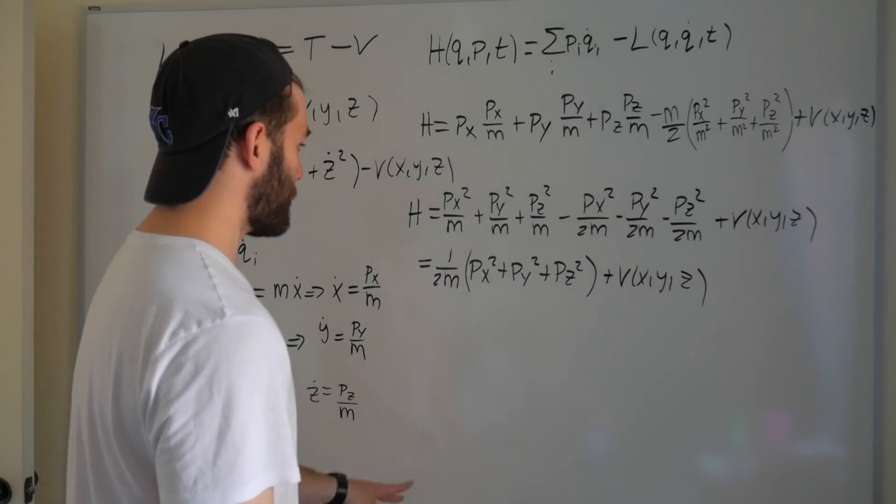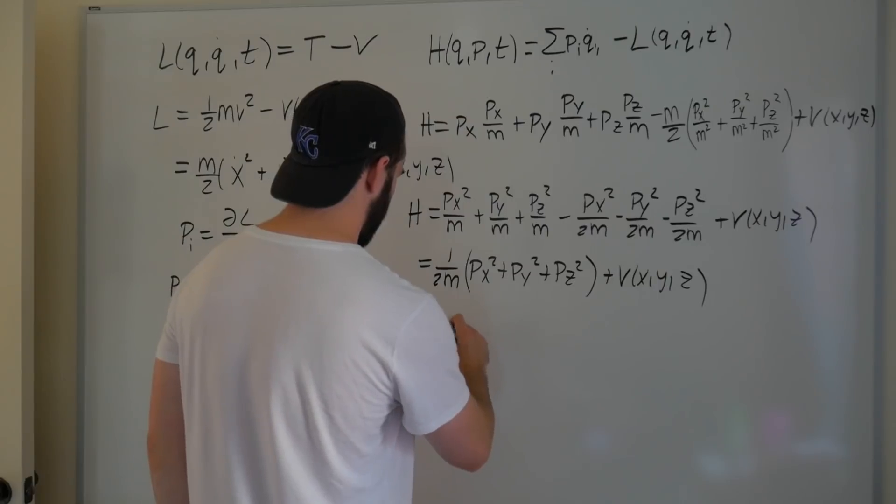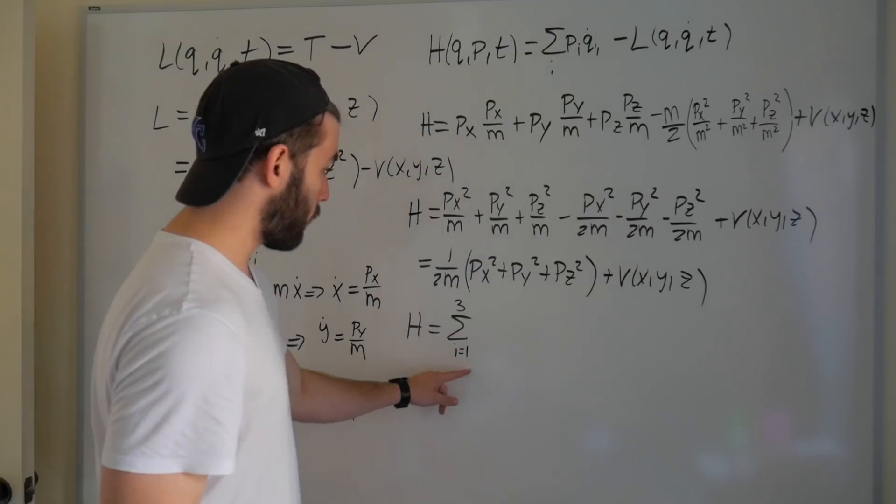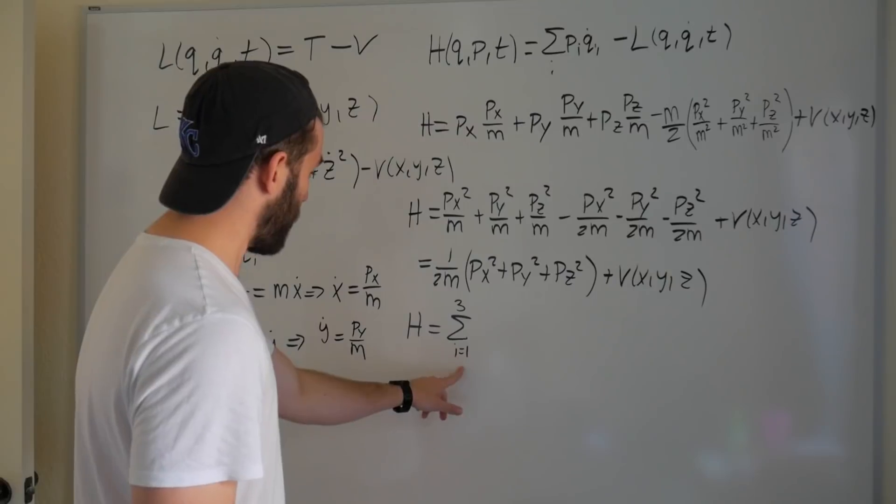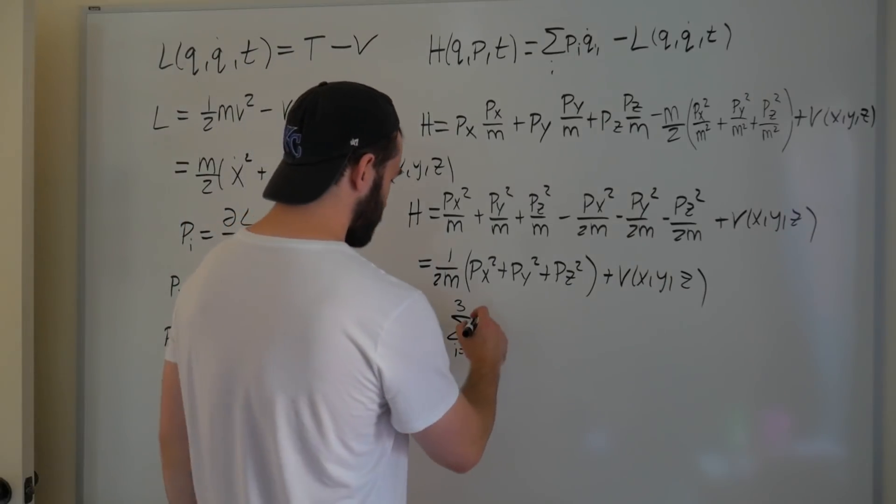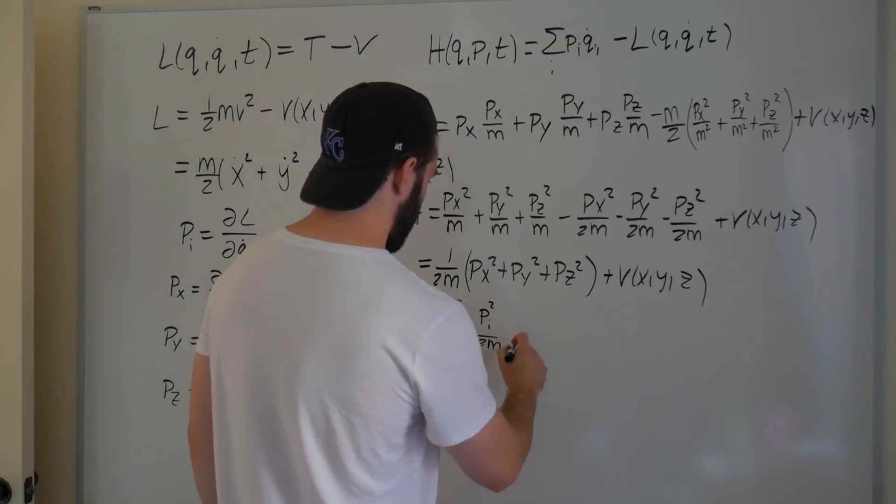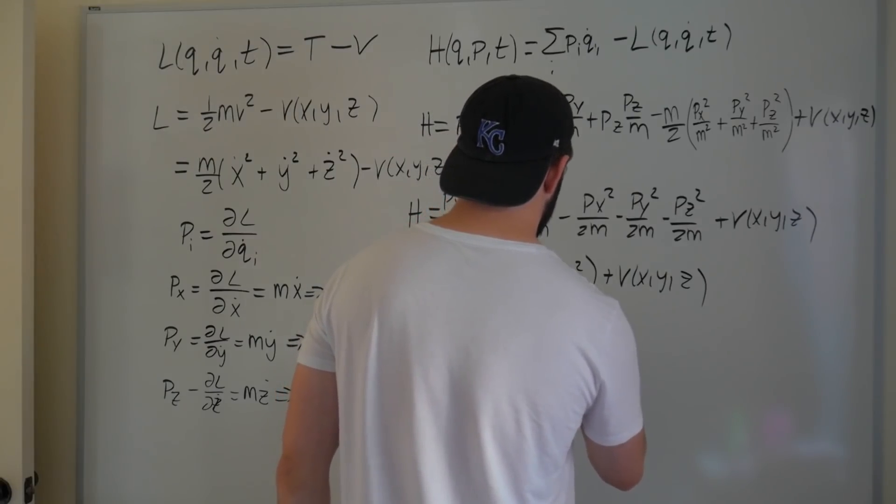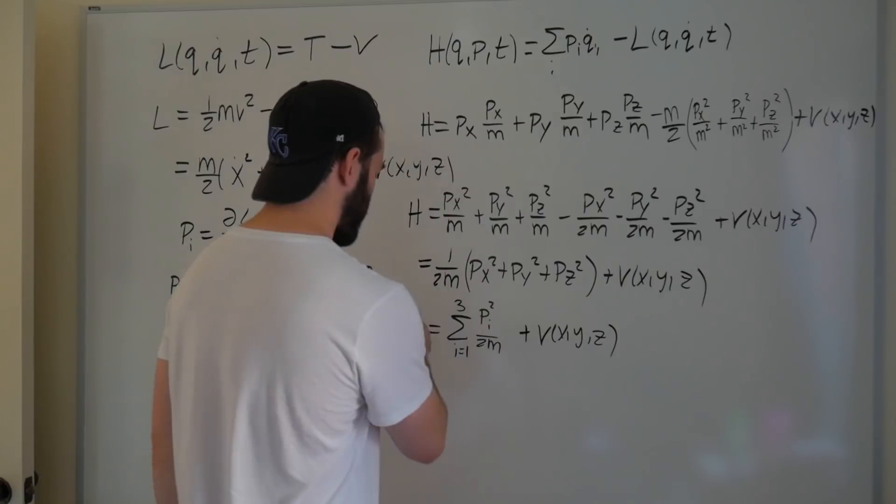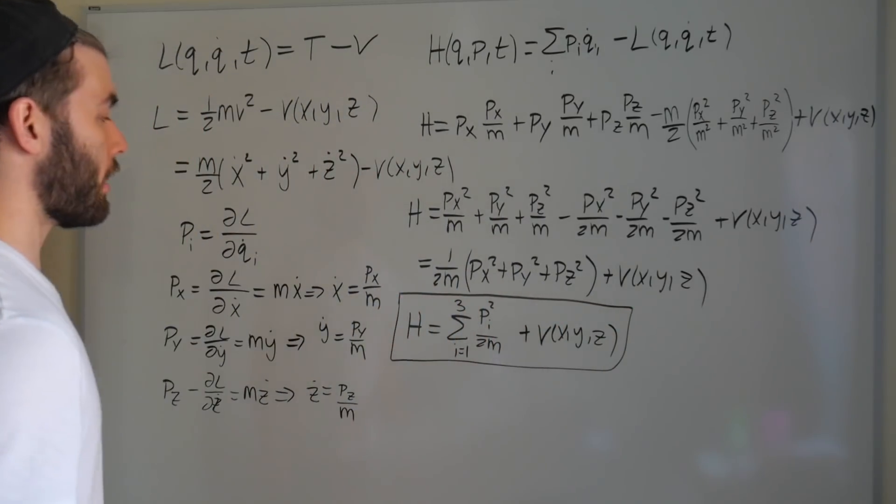And to write this in a bit more compact notation, we can write H equal to a sum over i, with i going from 1 to 3, so i equals 1 corresponds to the x component of whatever I'm about to write, i equals 2 is the y component, i equals 3 is the z component, of pi squared over 2m, and then just plus our potential.